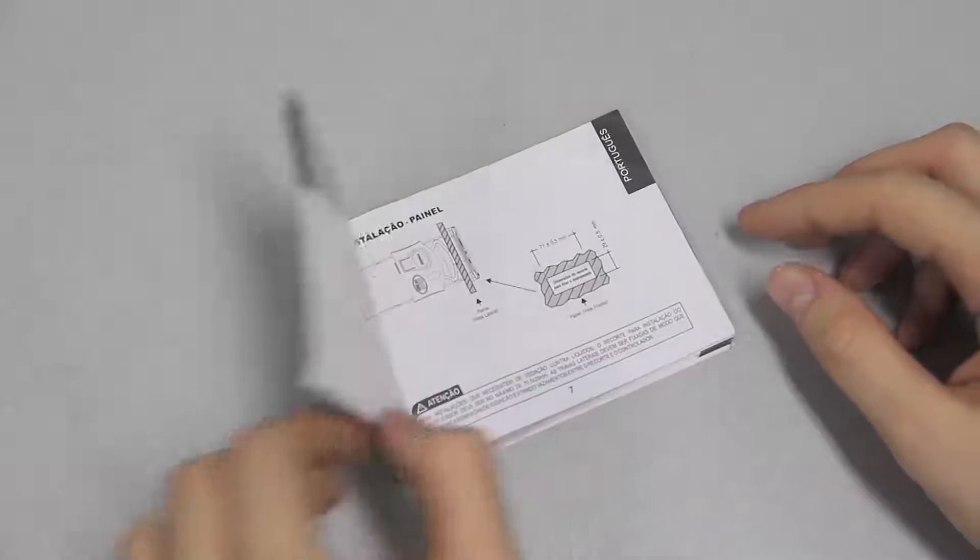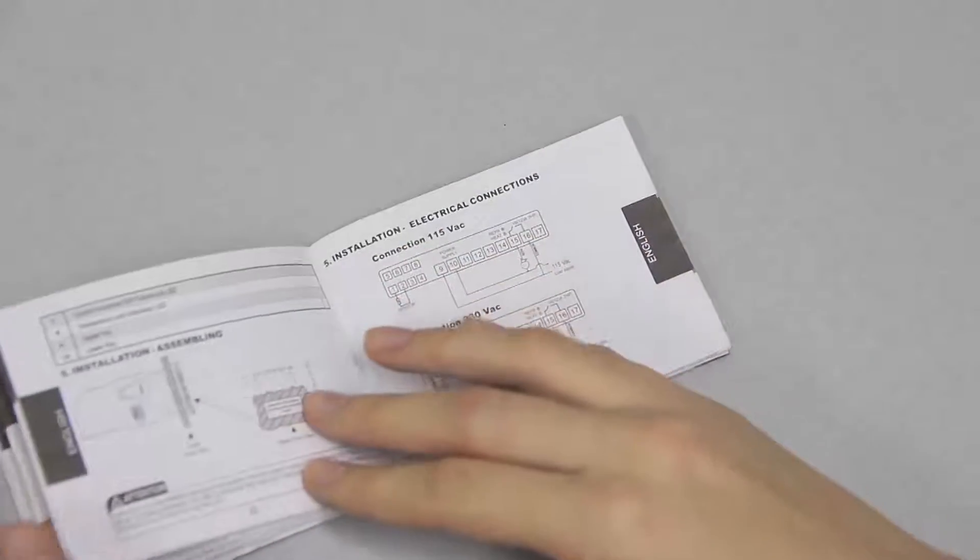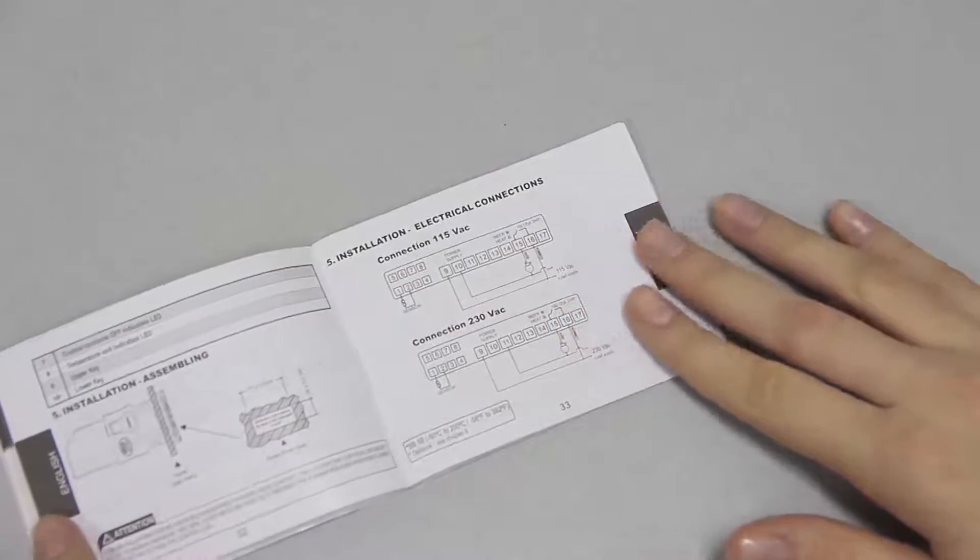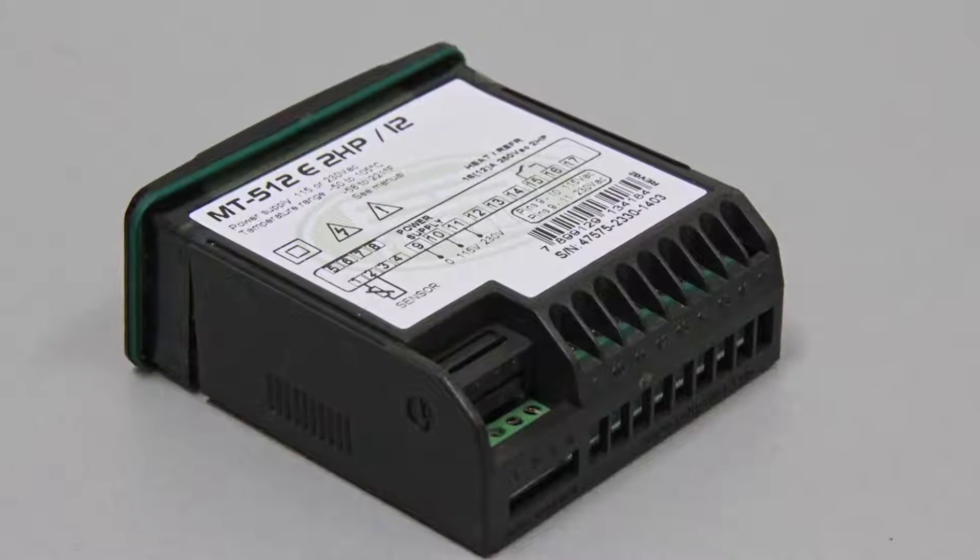The extended frame comes with two 10 amp switches, which can be used to turn on and off items such as lamps and fans. For the wiring of the MT512E 2HP controller, see the user's manual and the wiring diagram at the top of the instrument. Connect the terminals as shown in the animation.